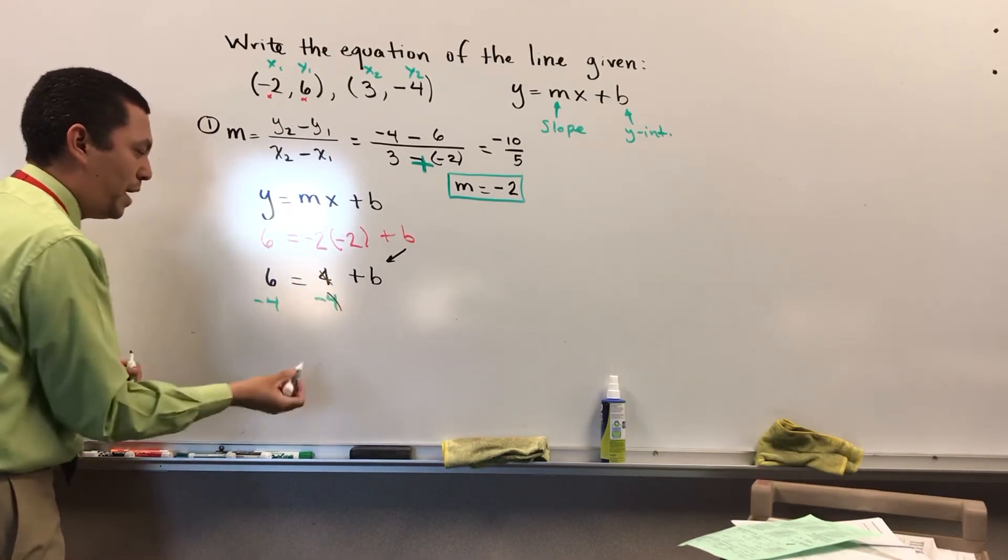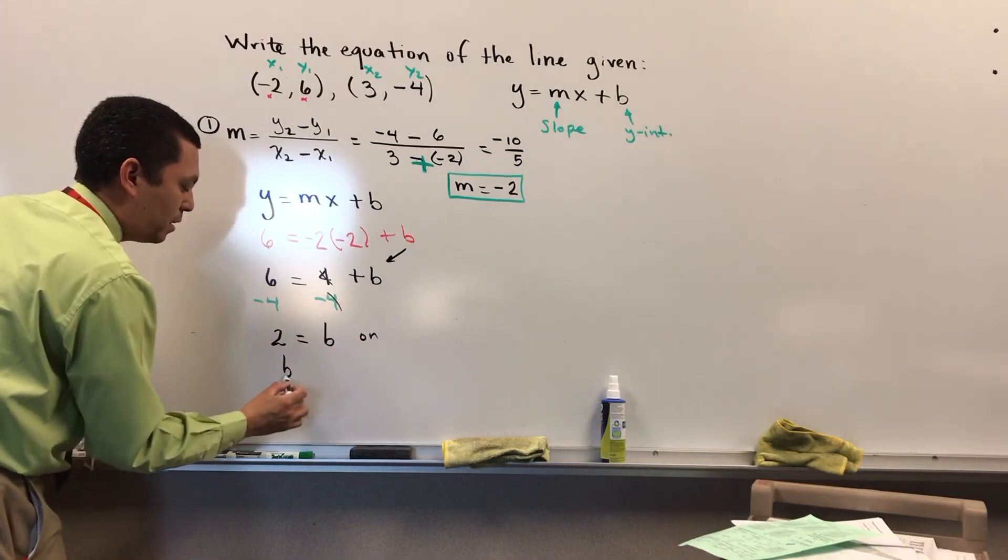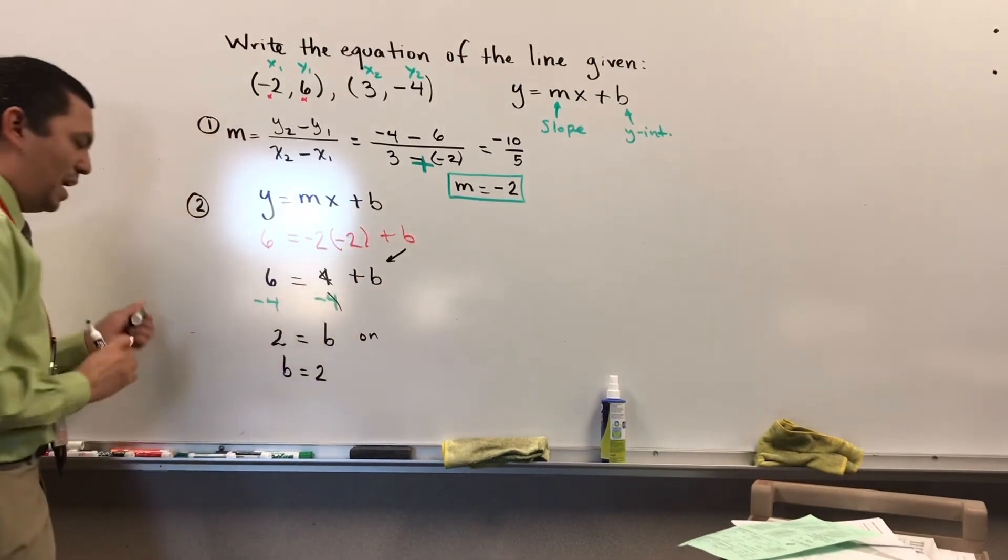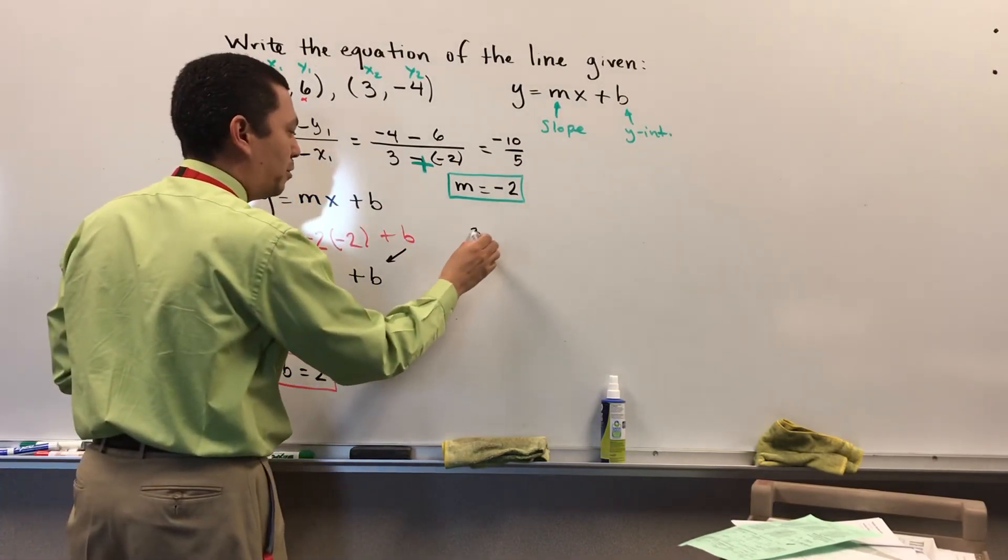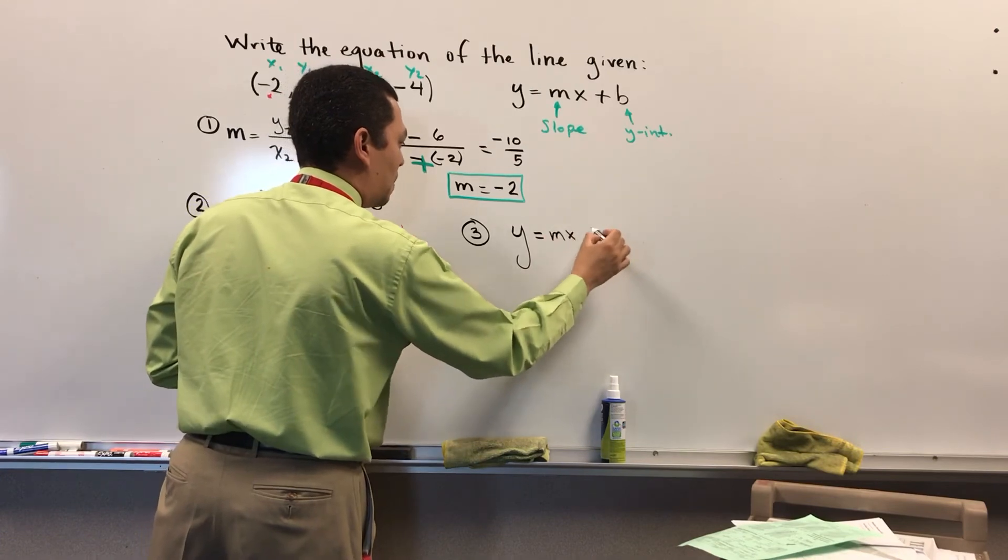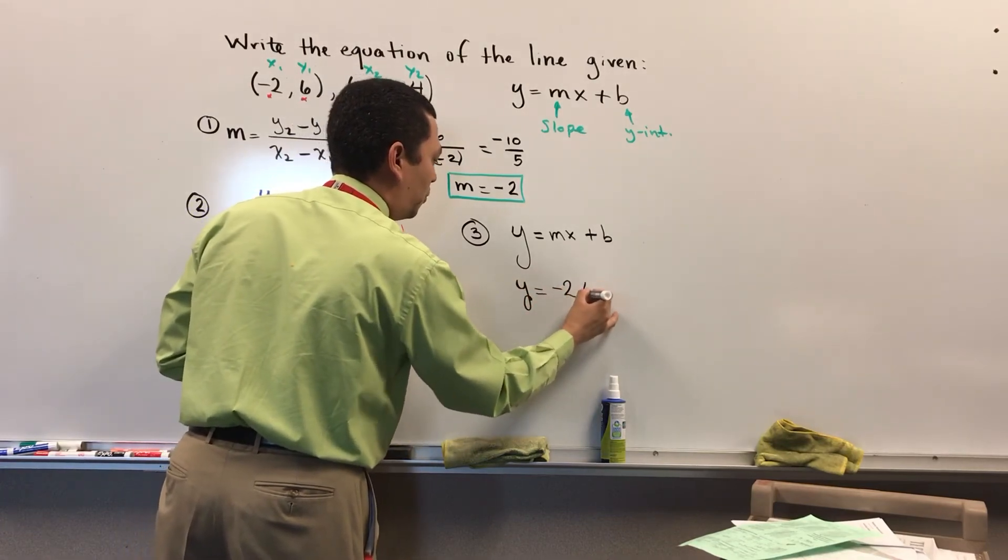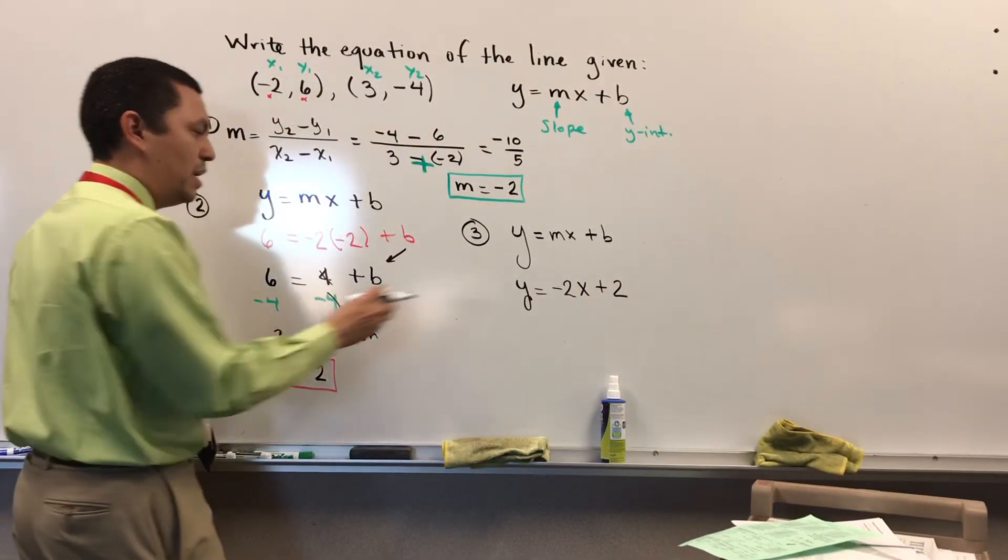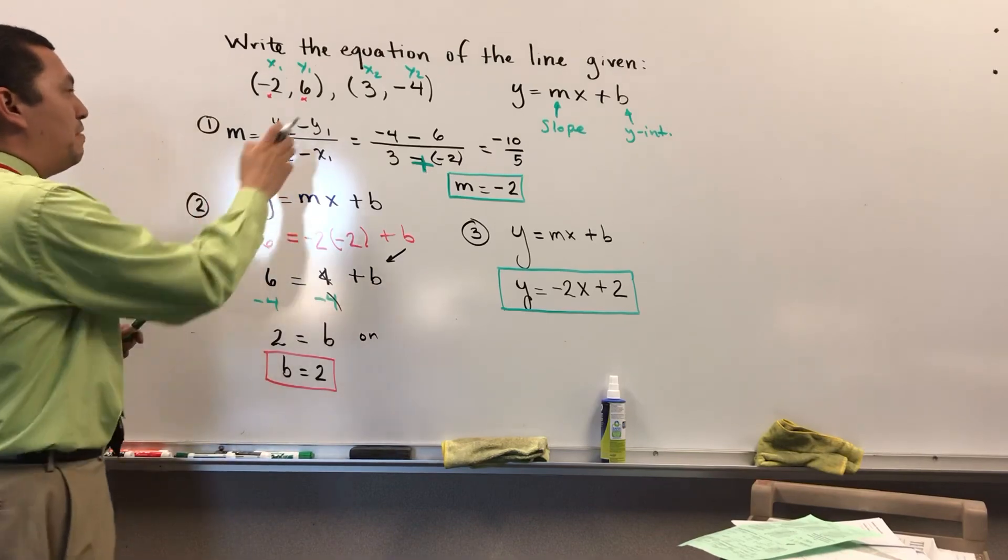And 4 goes away. So I have 6 minus 4 is 2 equals to b. Or, if you want, b equals to 2. This will be step number 2. So I have my slope. I have the y-intercept. Now what I need to do is make the substitution in the formula. I'm going to mark step number 3. So you know your slope-intercept form, y equals mx plus b. I know m. I found it. So y equals negative 2x. And then I know the y-intercept plus 2. And that will be the solution for this problem. Finding the equation of the line given 2 points.